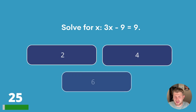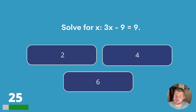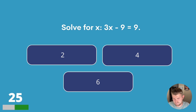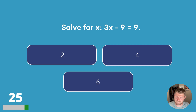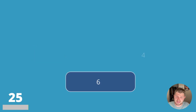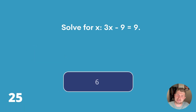Question twenty-five. Solve for x: 3x − 9 = 9. Is it two, four or six? The answer is six.